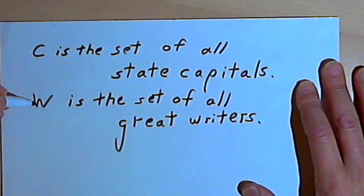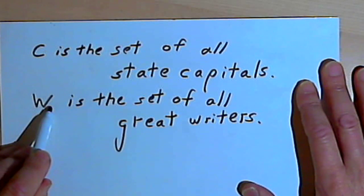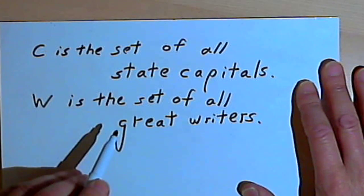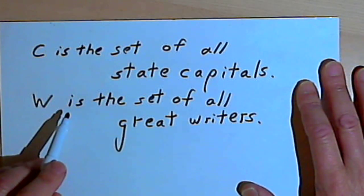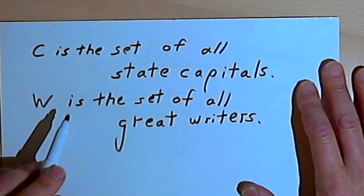But if I said that W is the set of all great writers, there's probably no way I could make a list of all great writers and have everybody agree with me. So the sentence W is the set of all great writers does not give me a well-defined set. So we're not going to use sentences like that when we're dealing with set theory.